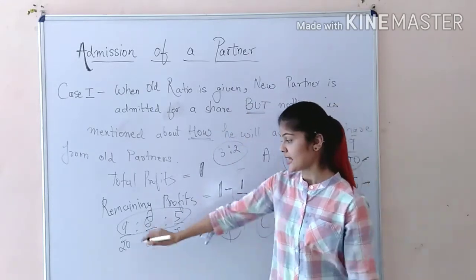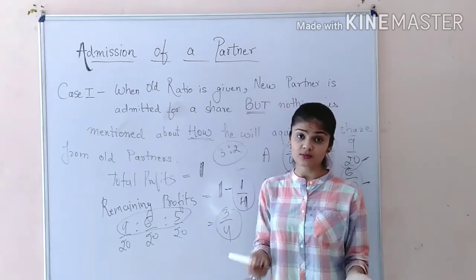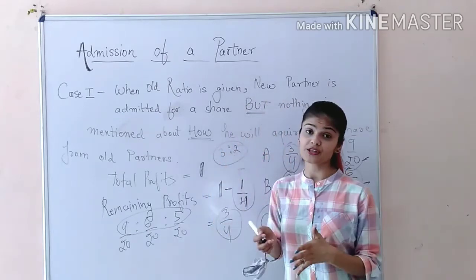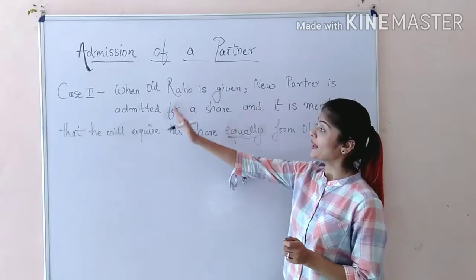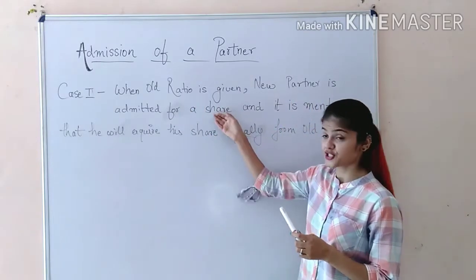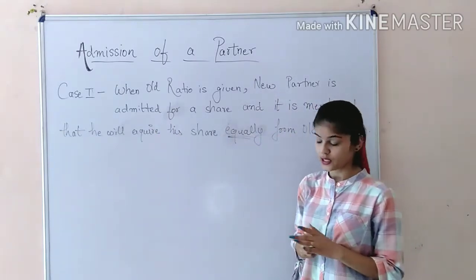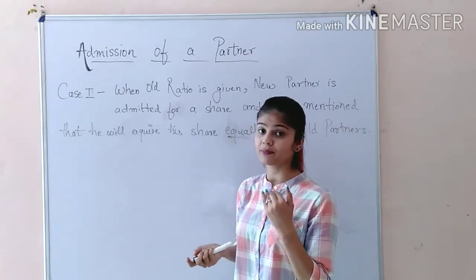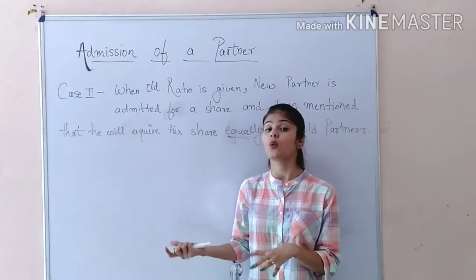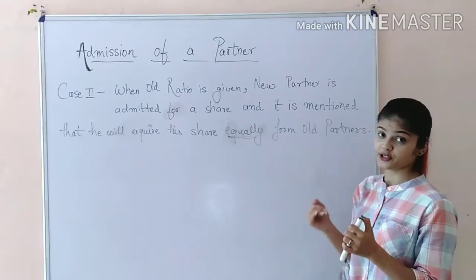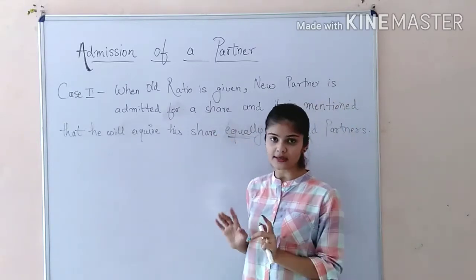So the final new profit sharing ratio in the first case is 9:6:5. Now let us move to the second case, where the old ratio is given, the new partner is admitted for a share, and it is mentioned that he will acquire his share equally from the old partners. Compared to the first case where nothing was mentioned, in this case it is clearly stated that the new partner will acquire his share equally from the old partners.